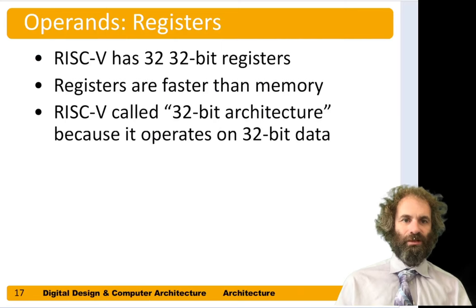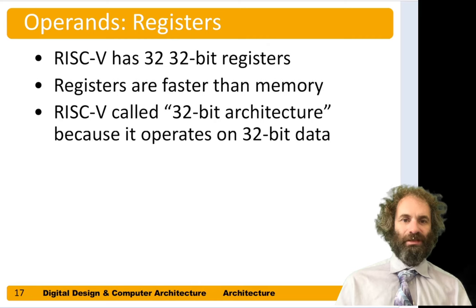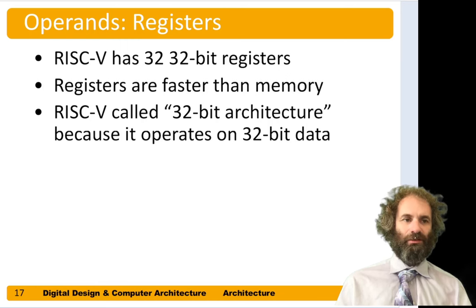Let's focus on our registers. RISC-V has 32 registers, each 32 bits wide. These registers are much faster than accessing memory, and RISC-V is known as a 32-bit architecture because it operates on 32-bit data. There's an extension to RISC-V, a 64-bit version of the architecture, in which the registers are 64-bits wide, and when you load data from memory, you get 64-bit chunks.